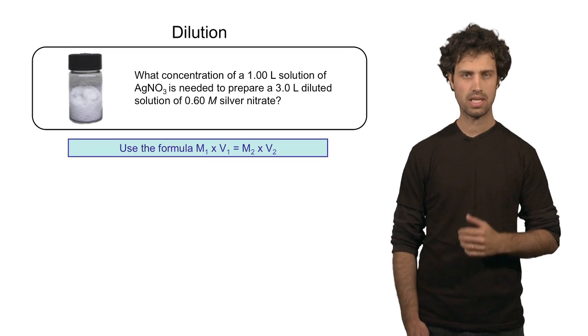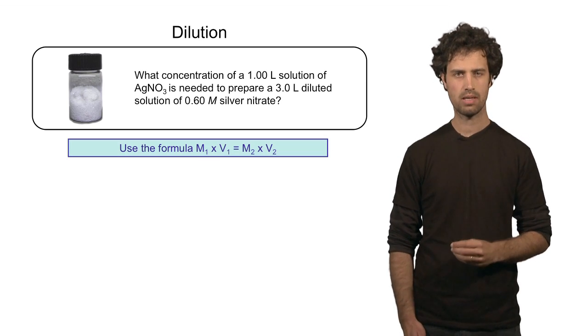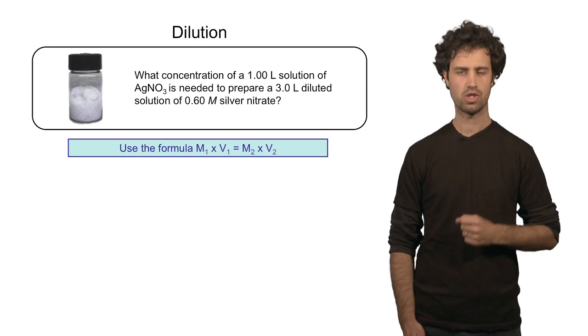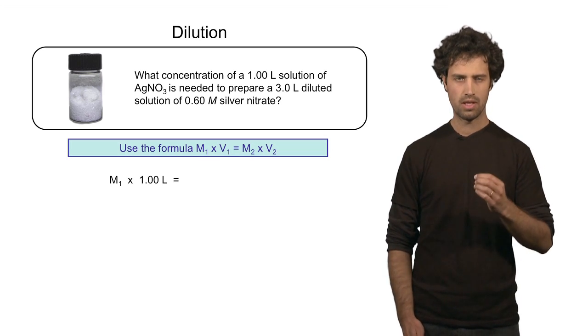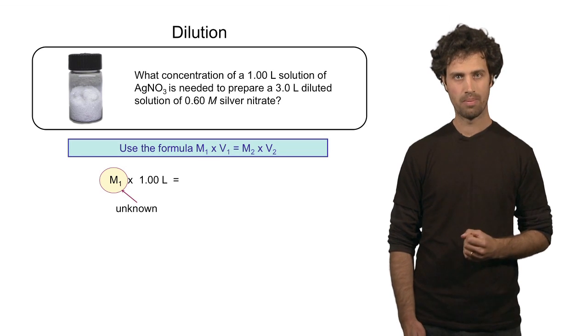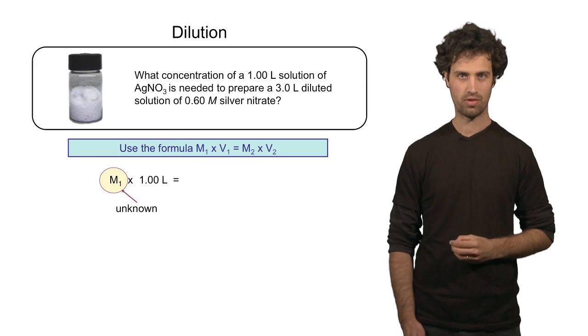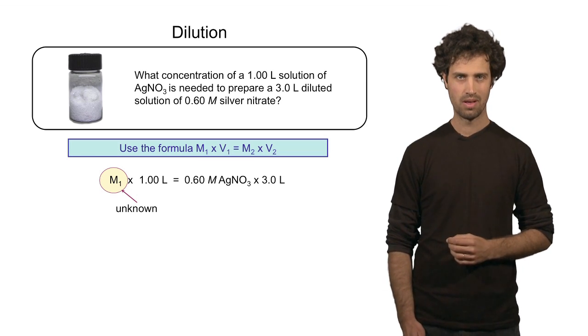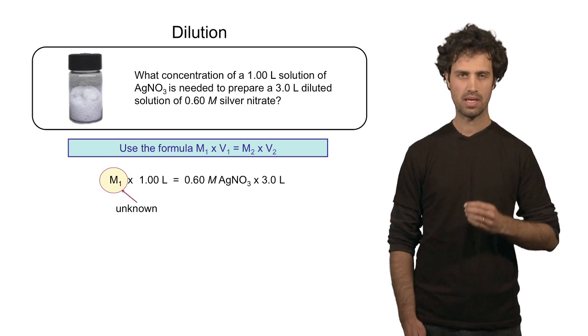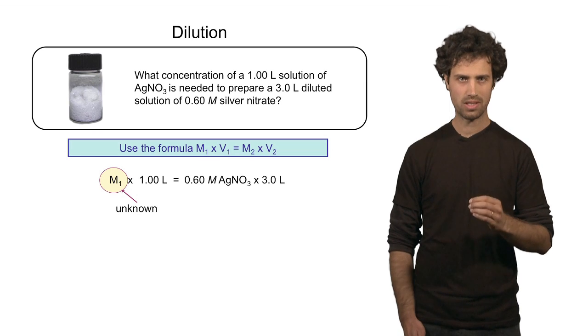Well, we use exactly the same formula as before: M1 times V1 equals M2 times V2. Let's fill in the values that we know. The original concentration I don't know. I have to calculate that. I do know the volume of the original solution, which is 1 liter.